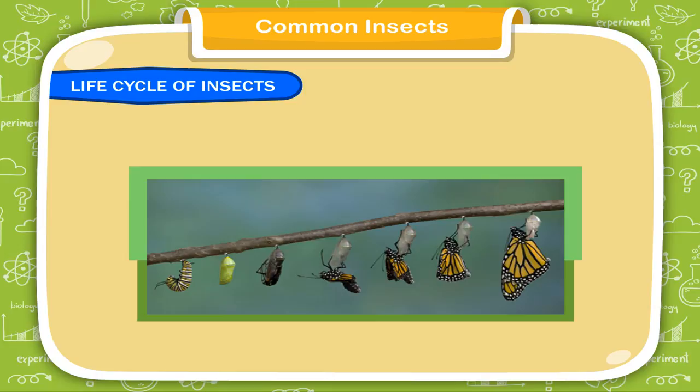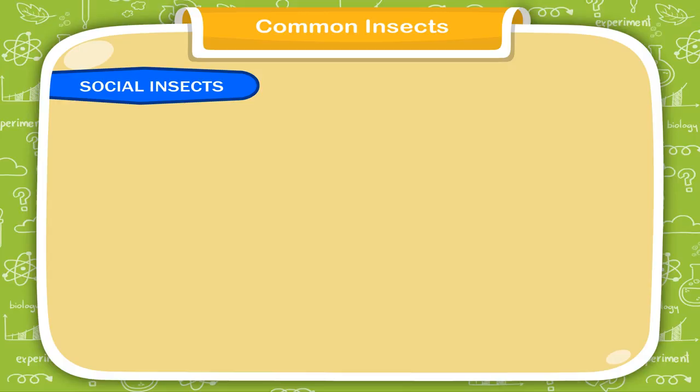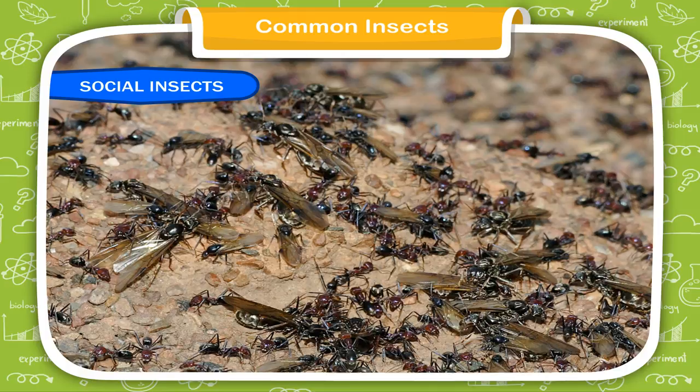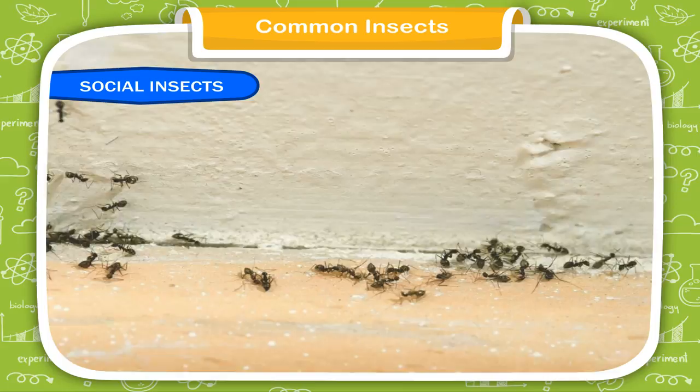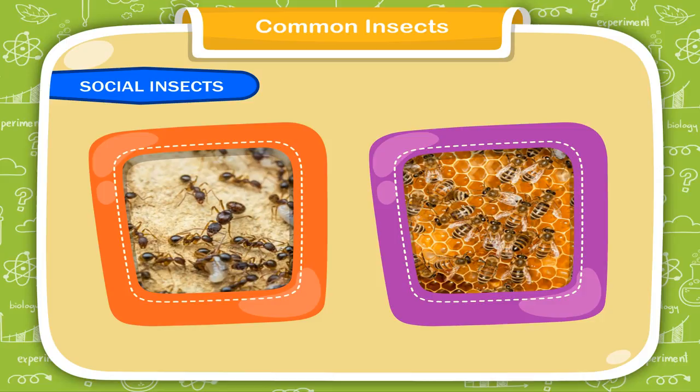The larva of a housefly is called a maggot. Social Insects. Some insects live on their own and others live in groups. Insects that live in a group with other individuals of the same species are known as social insects. Ants and honeybees are the most common social insects found in our environment.